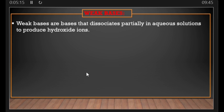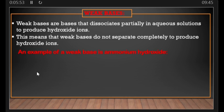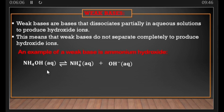Weak bases are bases that dissociate partially in aqueous solutions to produce hydroxide ions. This means weak bases do not separate completely — they only partially dissociate to form hydroxide ions. Not all of the weak base compound will dissociate completely to produce a hydroxide ion. An example of a weak base is ammonium hydroxide (NH₄OH), which splits into ammonium ion (NH₄⁺) and hydroxide ion (OH⁻).